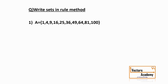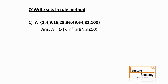How will you represent set A = {1, 4, 9, 16, 25, 36, ..., 100} in set builder form? If you look carefully, these numbers are actually squares of natural numbers — the square of 1 is 1, square of 2 is 4, square of 3 is 9, square of 4 is 16, and so on till the square of 10 which is 100. So we represent set A as: A = {x | x = n², where n ∈ N and n ≤ 10}.